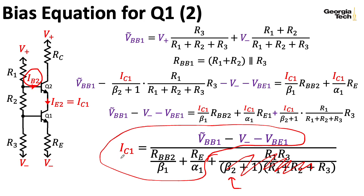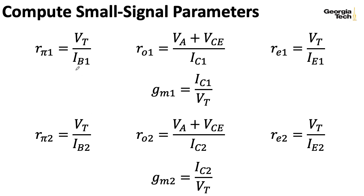Once you have IC1, you can compute IE2, and then use your alpha and beta relations to get the various other bias currents. At that point, you plug your bias currents into your expressions for the raw input and output impedance, the raw resistance, and the raw transconductance of your two transistors, and use those values in the remaining analysis.